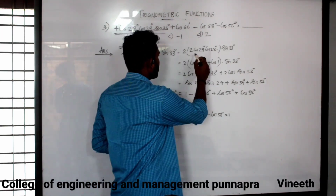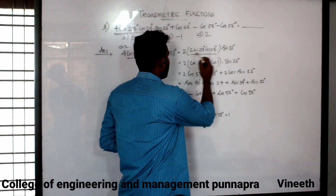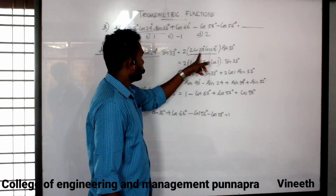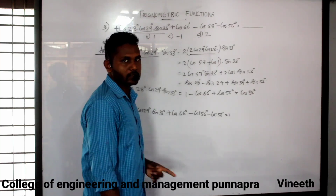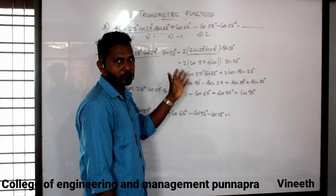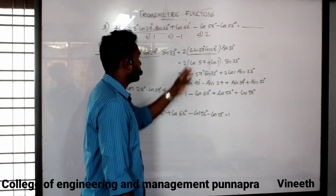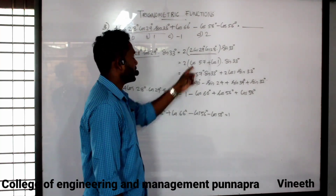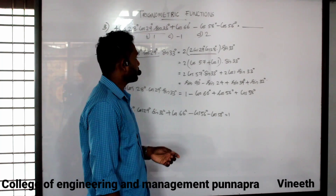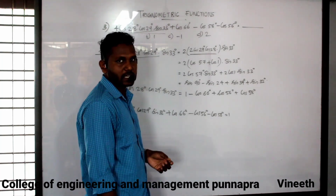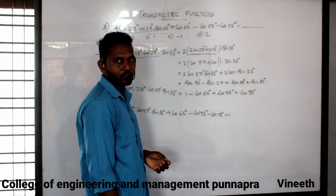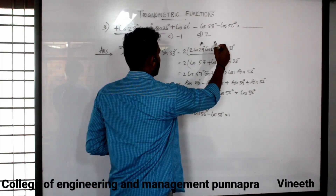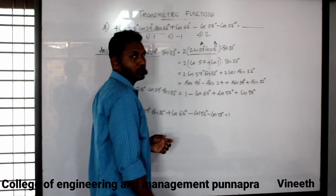E will determine the resultant term. The formula is 2 cos A cos B. Applying the formula: 2 cos A cos B equals cos(A plus B) plus cos(A minus B). The A in the model is 29 and B is 28.